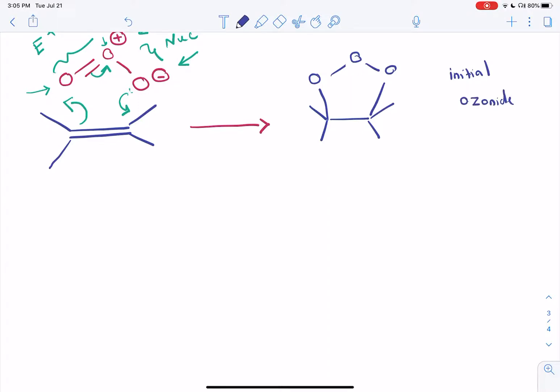This is a very unstable molecule. It has two oxygen-oxygen single bonds. Usually whenever you have bonds between electronegative atoms, that causes a lot of instability. And here you have two of them. So that leads to this molecule falling apart to form more stable compounds.